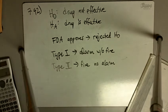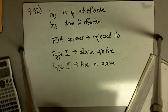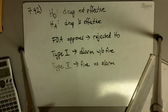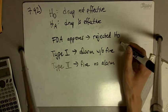So in this case, if we rejected the null hypothesis, we basically set off an alarm. In this case, that alarm was approving the drug. What error could not have been made?